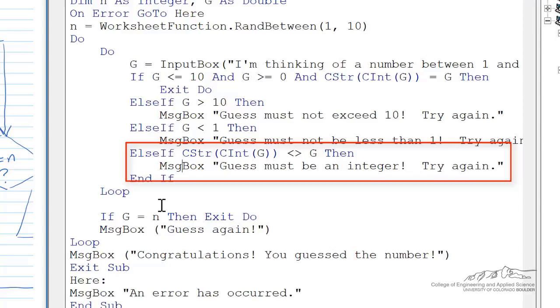I've added in one more else if to see if G is a non-integer, so we can identify the error that's involved. And we have a message box, guess must be an integer.